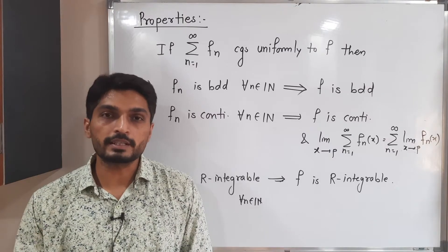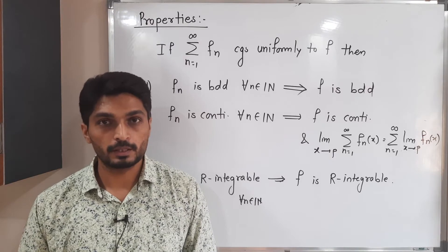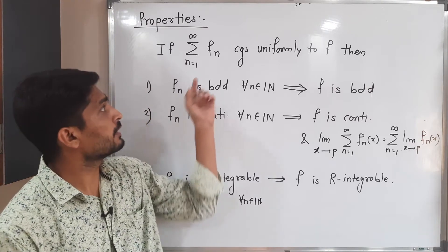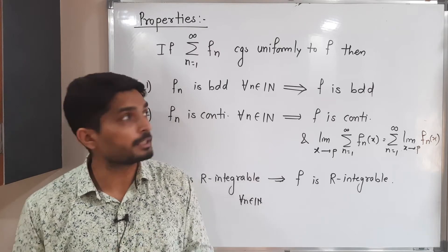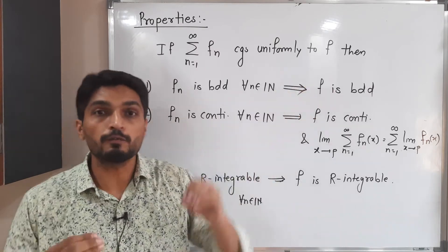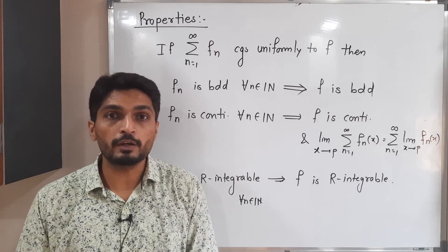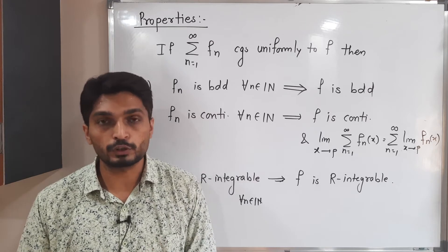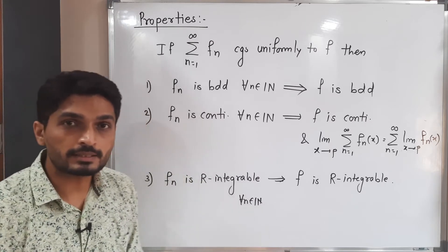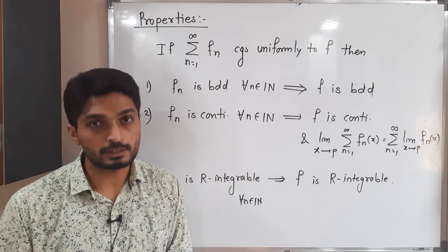Let us discuss a few interesting properties of uniformly convergent series of functions. Suppose summation fn be a series of functions which converges uniformly to function f. Obviously fn is a function which is defined on non-empty subset S of R for each n belonging to the set of natural numbers. Let us discuss these very important properties if we have such uniformly convergent series.